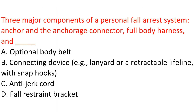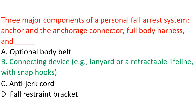Question: Three major components of a personal fall arrest system are the anchor and anchorage connector, full body harness, and dash. A. Optional body belt. B. Connecting device — for example, lanyard or a retractable lifeline with snap hooks. C. Anti-jerk cord. D. Fall restraint bracket. Answer: B. Connecting device — for example, lanyard or a retractable lifeline with snap hooks.